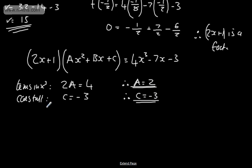I'm now going to look at terms in x squared. On the left-hand side, we'll have 2bx squared plus 1ax squared must equal 0x squared. Now we know that a is 2, so 2b plus 2 equals 0. We can see that b equals minus 1.